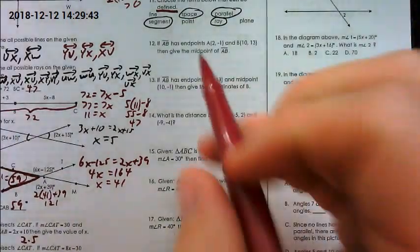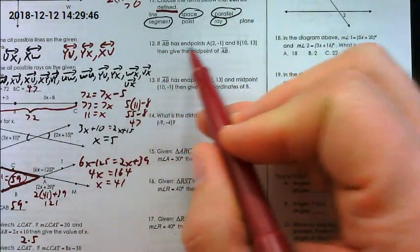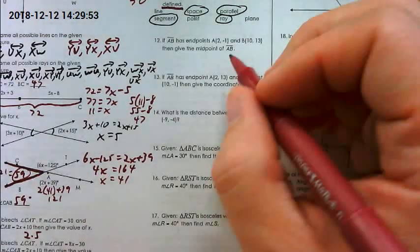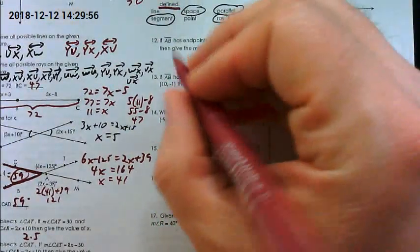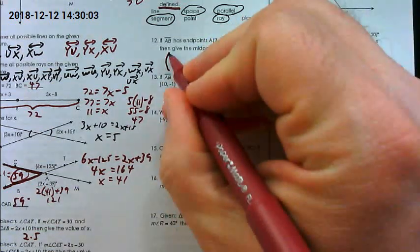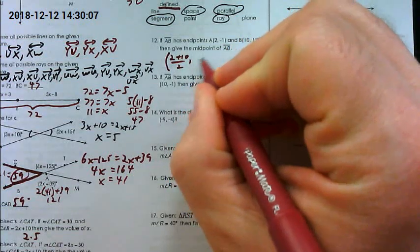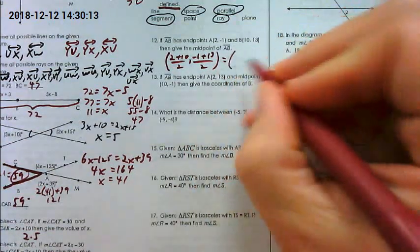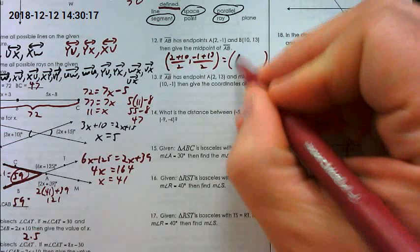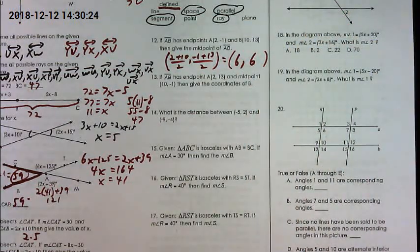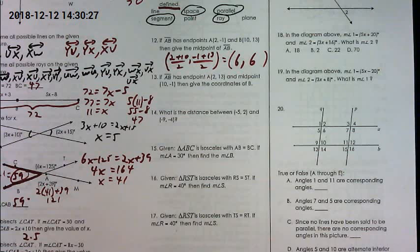Alright, line number 12. If segment AB has endpoints at this and this, then give the midpoint of AB. In order to find a midpoint you do an average, average of the X's, average of the Y's. You should hopefully know your midpoint formula which is X1 plus X2 divided by 2, Y1 plus Y2 divided by 2. So here, 2 plus 10 divided by 2, negative 1 plus 13 divided by 2. 2 plus 10 is 12, divided by 2 is 6. Negative 1 plus 13 is 12, 12 divided by 2 is also 6. So the coordinate here is at 6, 6. Alright, we'll stop there and pick up tomorrow. Thank you.